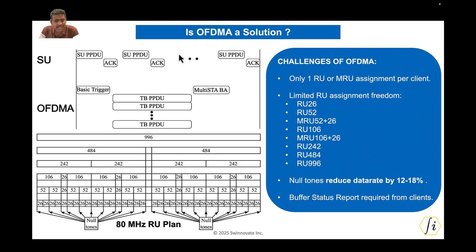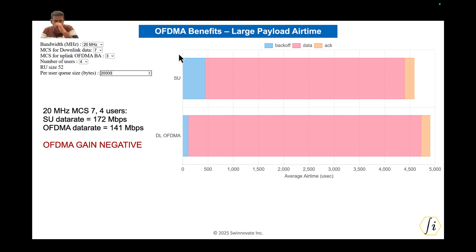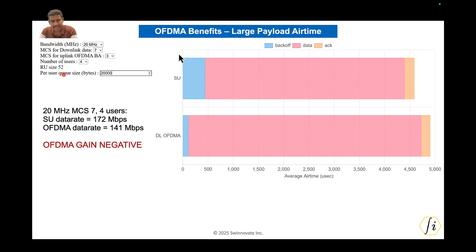Let us do some calculations to understand in what scenario OFDMA will have gain. The first scenario uses 20 MHz bandwidth. Assume clients are using MCS 7 and ACKs are also sent using OFDMA with MCS 3. Assume 4 users — so 20 MHz is split between 4 users with RU size 52, assigning RU52 to each of the 4 clients. For the calculation, assume per-user queue size is about 20,000 bytes — so there is 20,000 bytes of traffic to be sent by each client.